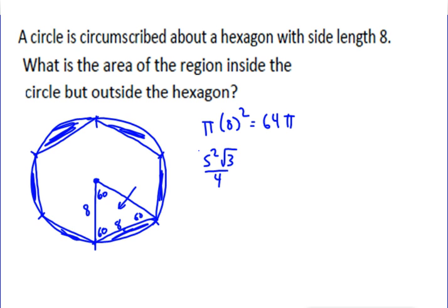There are 6 of them, so you multiply by 6. So really the formula is 3(side²)√3/2. So we do 3 times side squared, which is 8, so that's going to be 64√3/2.